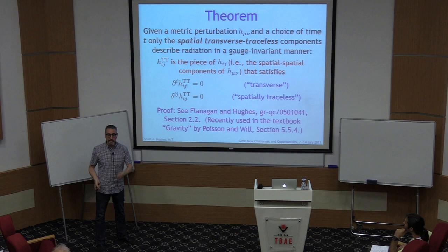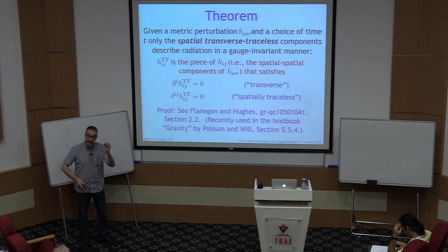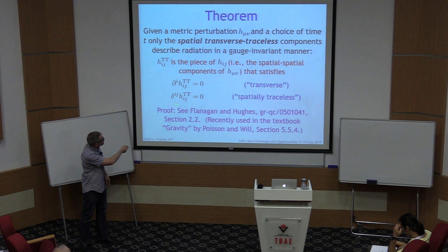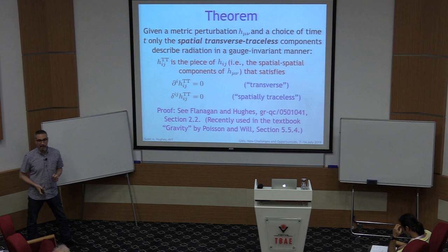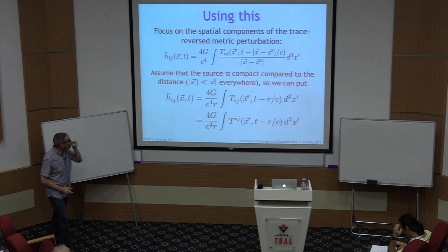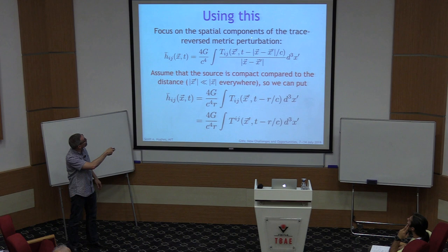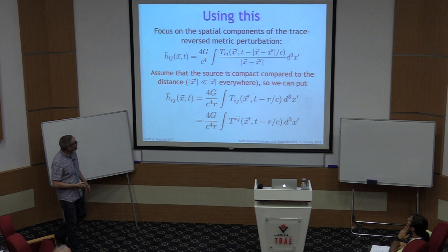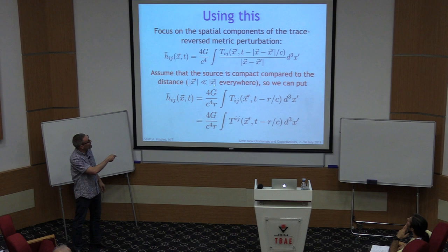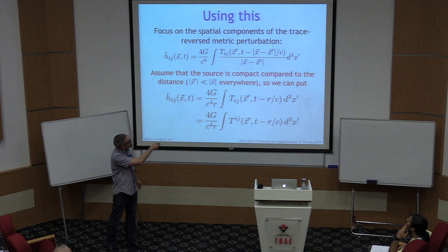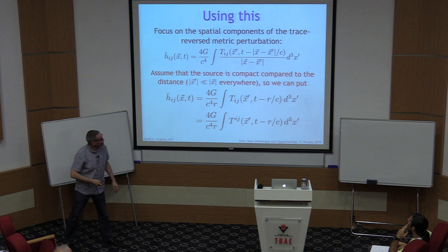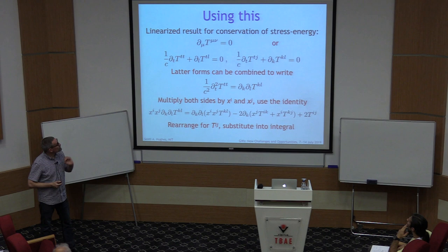This is great: lock me in a closet with your favorite stress-energy tensor, I'll churn out H-mu-nu, and then to find the radiation content, I just pick out the piece satisfying those constraints — that's gravitational radiation. Let's focus on the spatial components of the trace-reverse metric perturbation. The solution to the wave equation has the I-J spatial piece, and assuming the source is compact compared to the measurement distance, I can simplify and approximate.